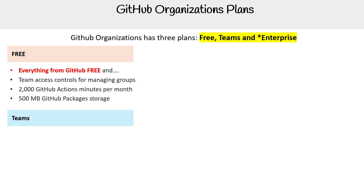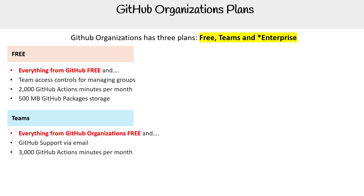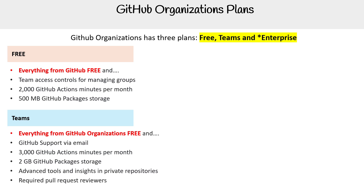Then we have Teams, and this is where we start paying. You get everything from the GitHub org Free edition, plus GitHub support via email, 3000 GitHub Actions minutes per month, two gigabytes of GitHub Package storage, advanced tools and insights in private repos, required pull request reviewers, and multiple pull request reviewers. Note that the minutes for GitHub Actions and packages look very similar to the Pro plan for GitHub personal.